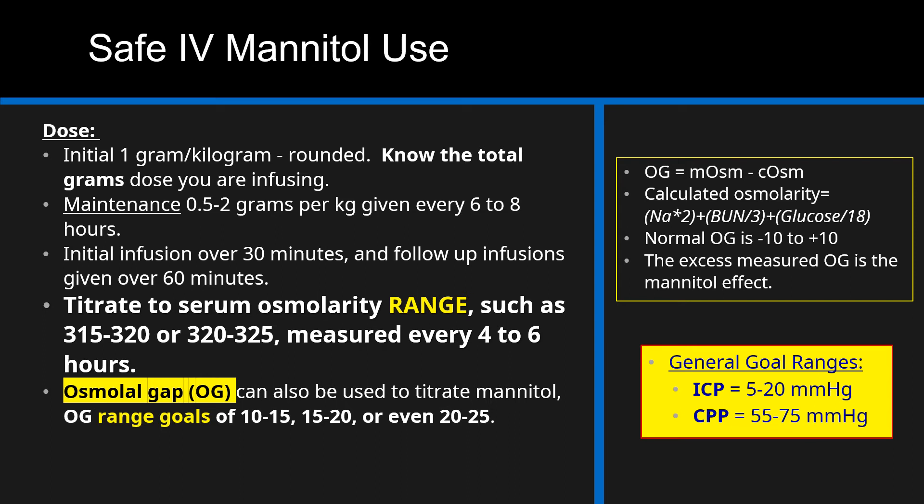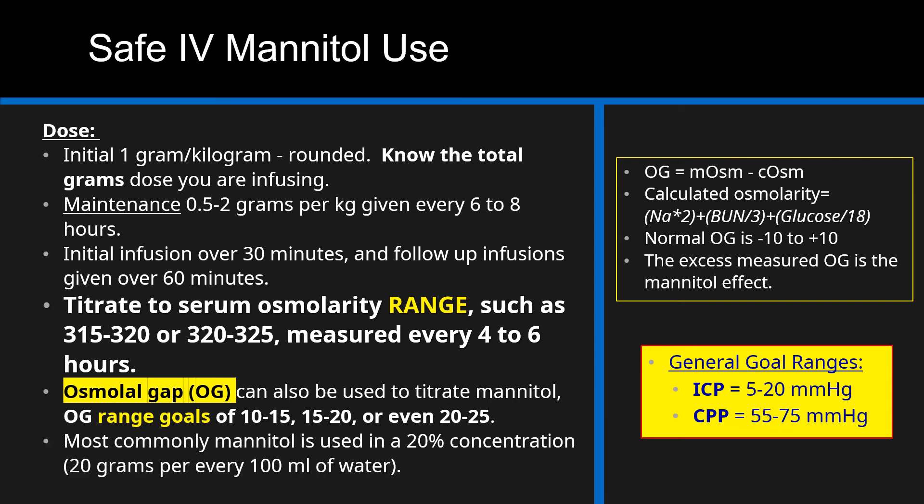Osmolar gap range goals for elevated ICP are 10 to 15, or 15 to 20, or even 20 to 25. The titration of the mannitol dose is to the measured osmolarity or the osmolar gap. The general goal range for ICP is 5 to 20 mmHg, and for CPP is 55 to 75 mmHg.